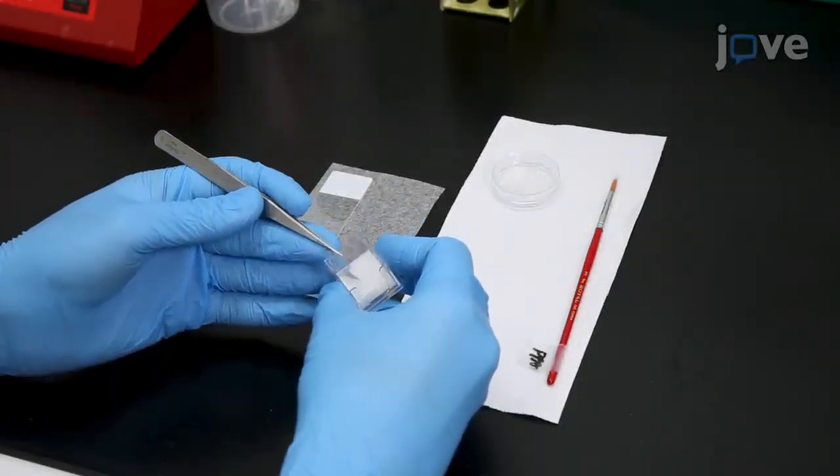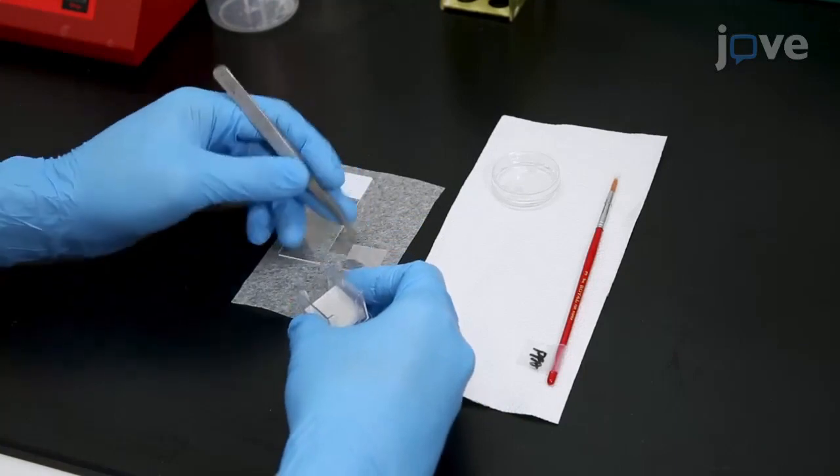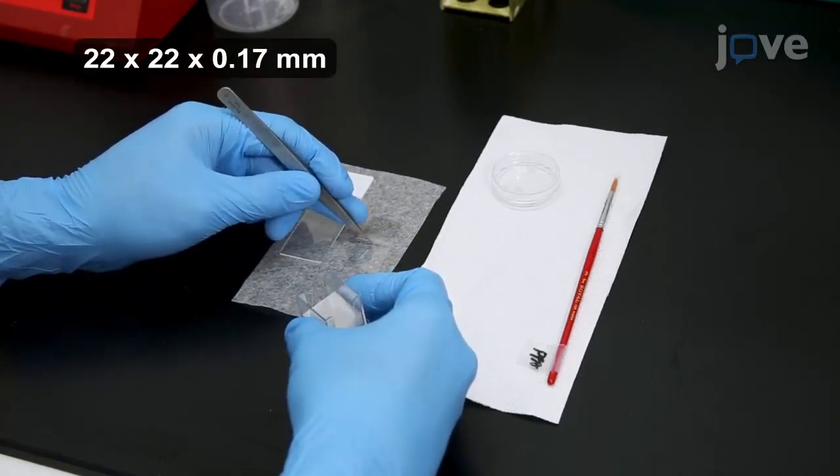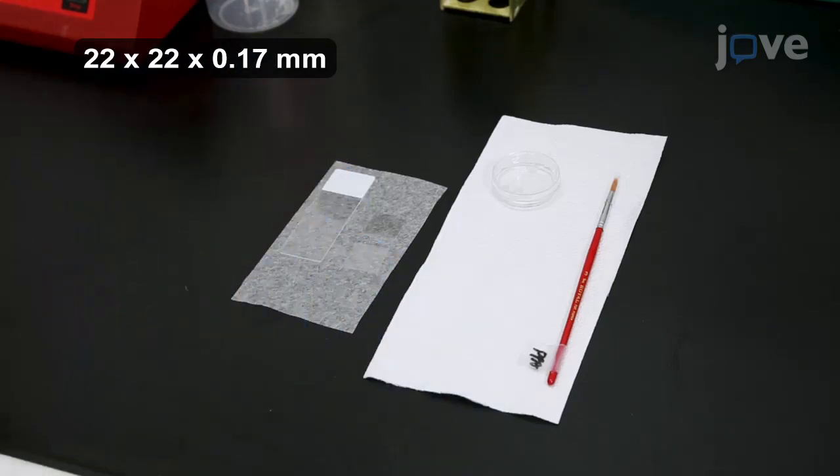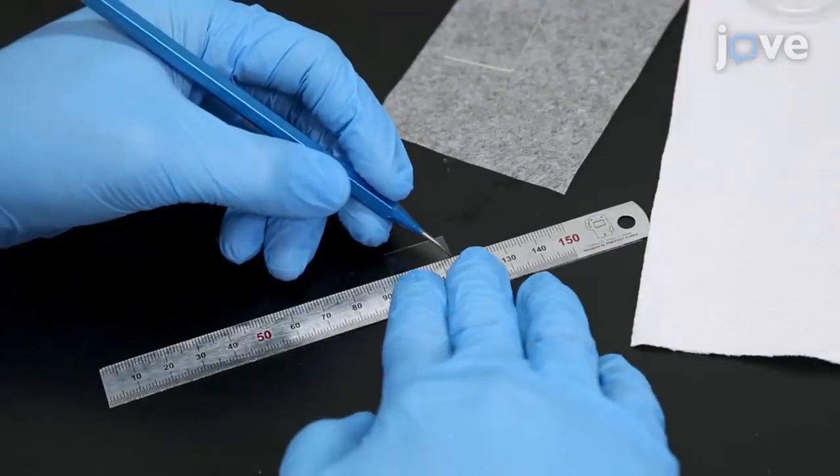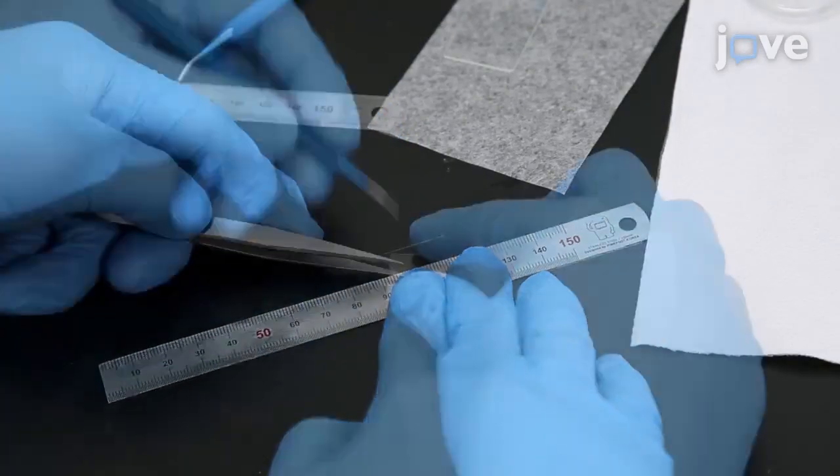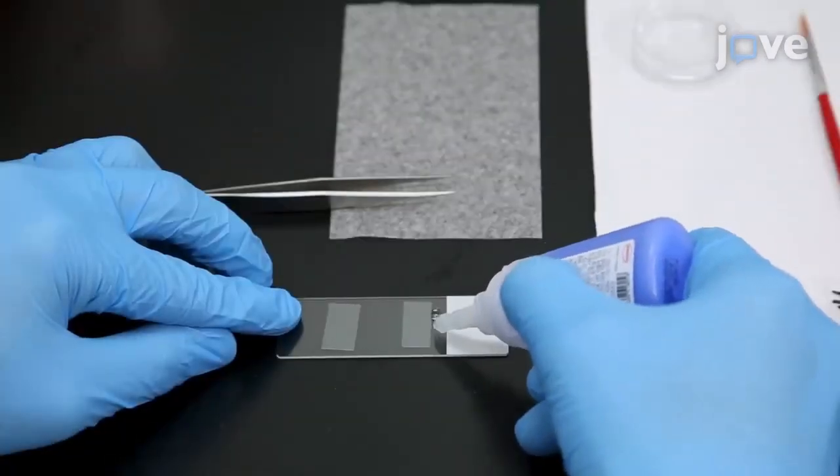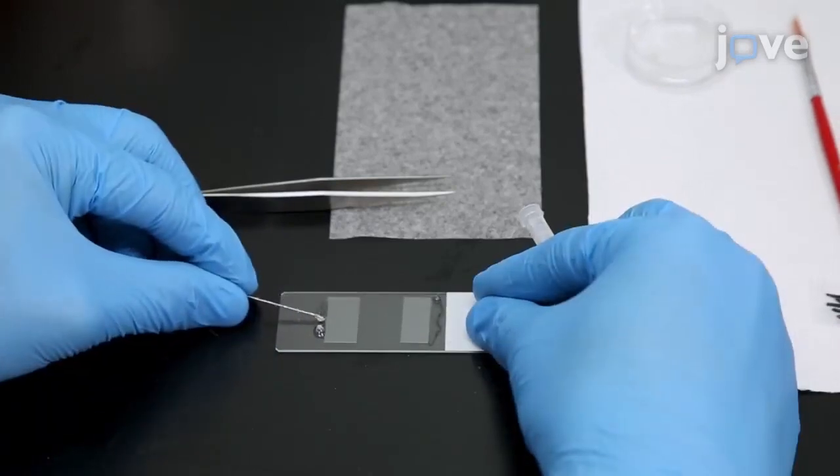After fixing and slicing mouse brain tissue according to the text protocol, prepare one glass slide and two cover glasses for each tissue slice. Use a glass cutter to cut one of the square cover glasses in half. Then create a spacer by using super glue to attach the two pieces onto the glass slide.